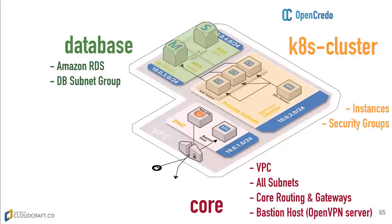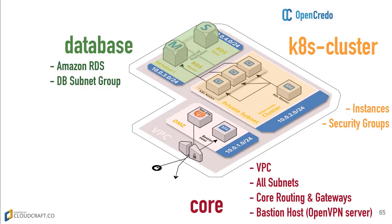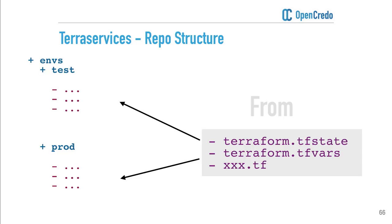In our Power Mod setup, we had those three different areas created as modules, but they were still ruled by a single environment state file. With Terra Services, we now have one state file ruling each of these. We'll end up going from one Terraform state file for each environment to having one for each of the main components per environment. In this case, we'll end up having six state files.